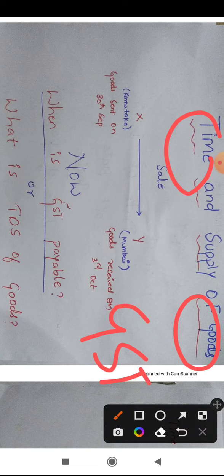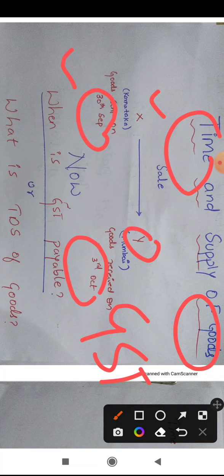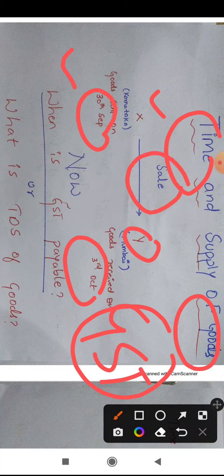For example, X, a person in Karnataka, is delivering goods to person Y in Mumbai. He sent the goods on 30th September, but the goods were received by Y on 3rd October. So on which date will GST be liable — 30th September or 3rd October? We don't know when the GST will be applicable.